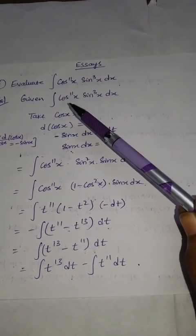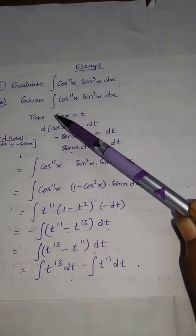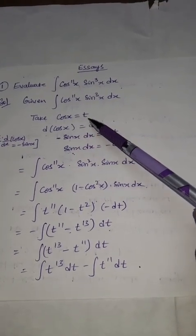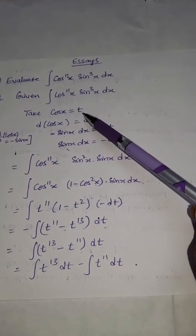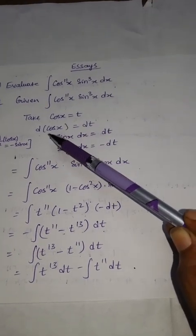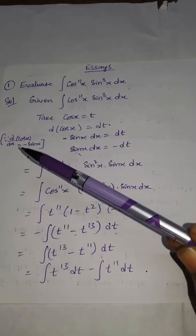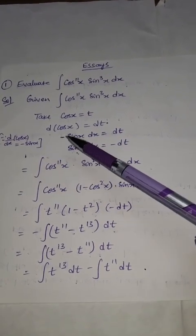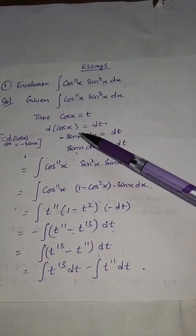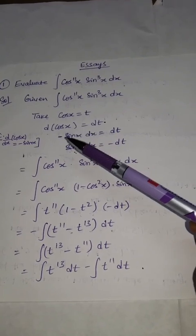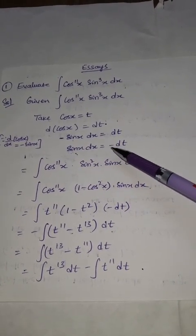We use substitution: let cos x equal to t. Taking the derivative, the derivative of cos x is minus sin x, so minus sin x dx equals dt, which means sin x dx equals minus dt. These derivative formulas are compulsory for any problem in M2.